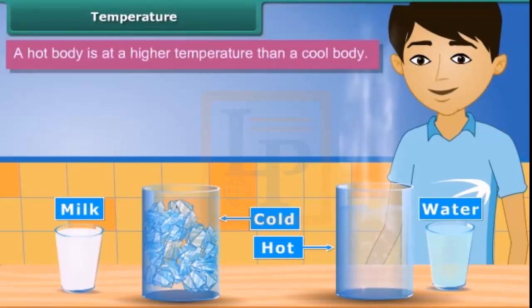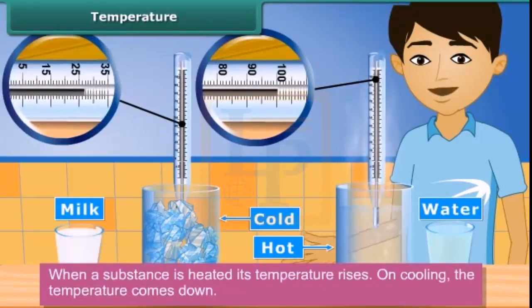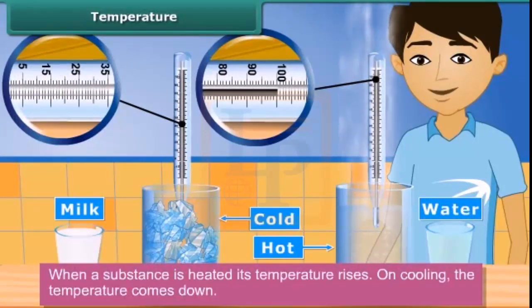Obviously, for this we need a measure to know about coldness and hotness of our body. A hot body is at a higher temperature than a cool body. When a substance is heated, its temperature rises. On cooling, the temperature comes down. Degree of hotness or coldness in a body is described as its temperature.